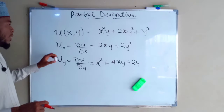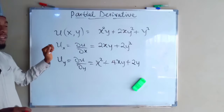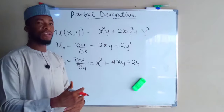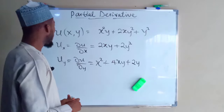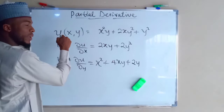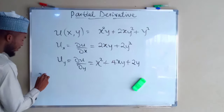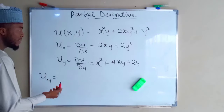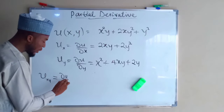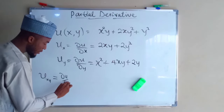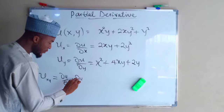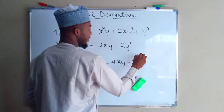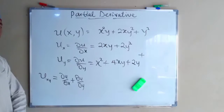So this is how to differentiate a function using partial derivatives. You can differentiate that function with respect to one of the variables, or you can differentiate it with respect to all the variables. If we are to differentiate with respect to x and y together — that is u subscript xy — you are only going to add these two results together in order to obtain that derivative.